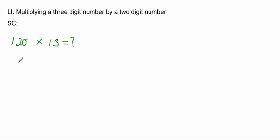120 is going to be 100 plus 20, plus 0, just to make sure that it's correctly done. And the 13 would partition into 10 and 3.